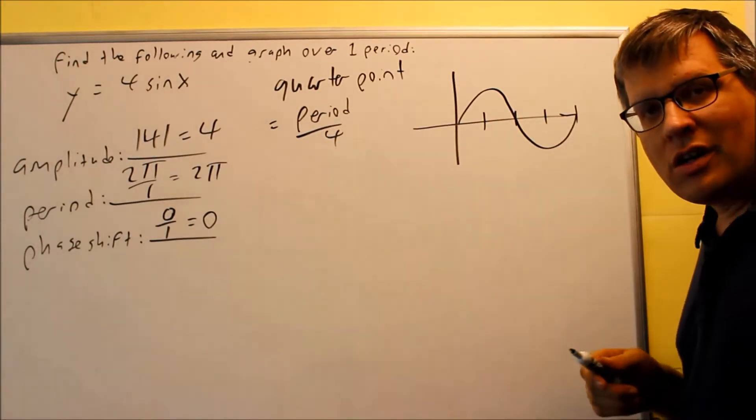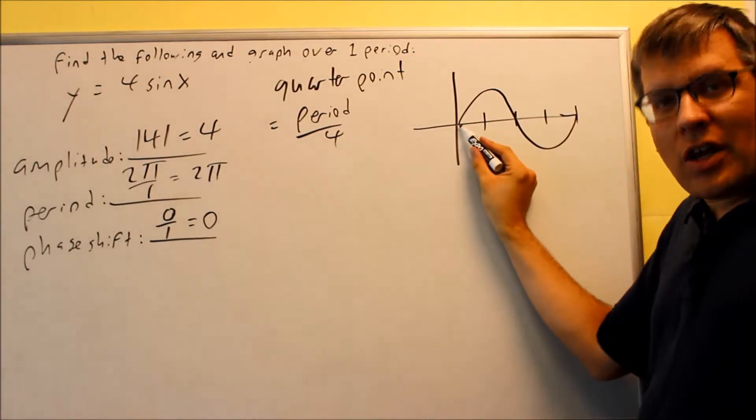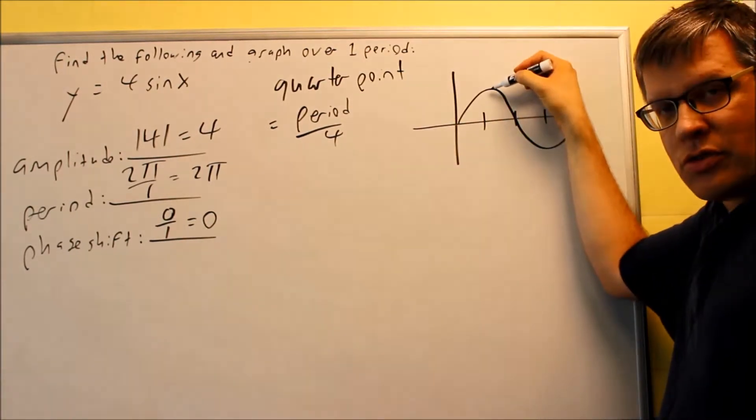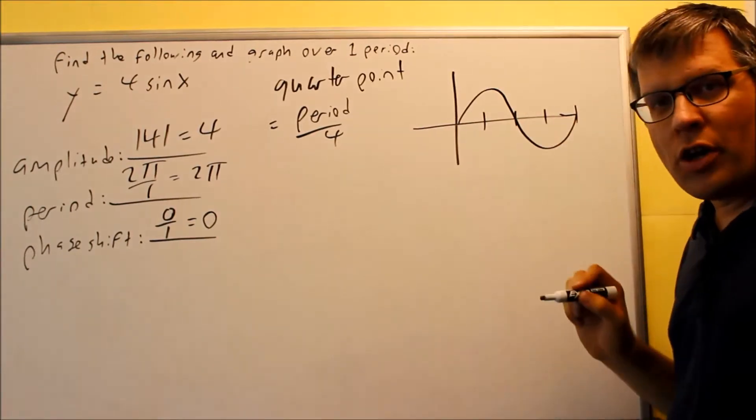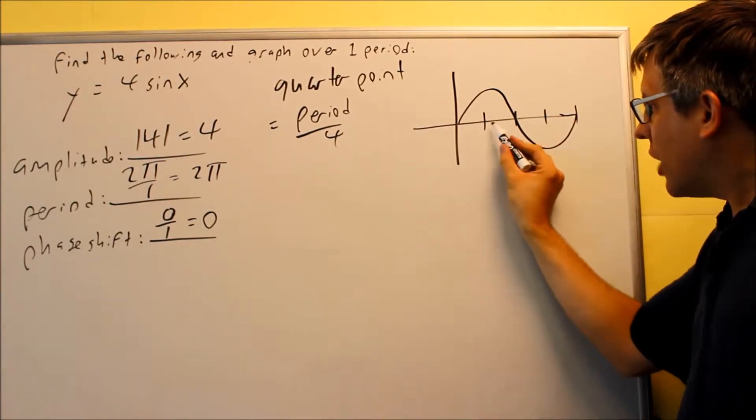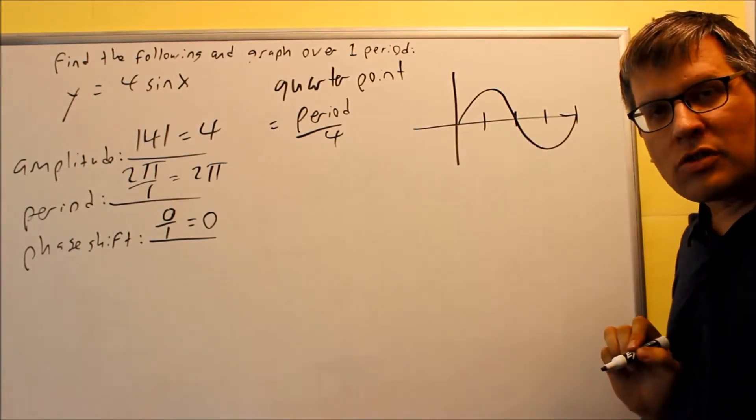Now, a key point is a place where the graph is either at the x-axis or at an amplitude. That's what defines the key point. And when you do these graphs, you want to make sure you label all of your key points.